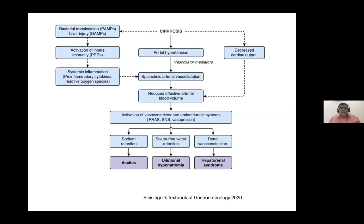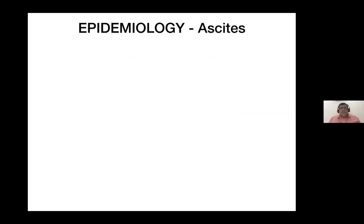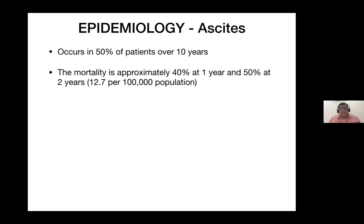Ascites occurs in 50% of patients over 15 years of development of cirrhosis. Mortality is approximately 40% at one year and 50% at two years after development of ascites. The most reliable factors predicting poor prognosis are hyponatremia, low arterial pressures, increased serum creatinine, and low urinary sodium.